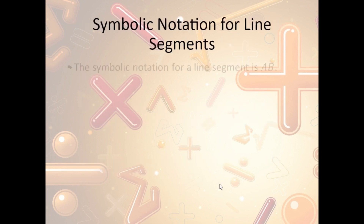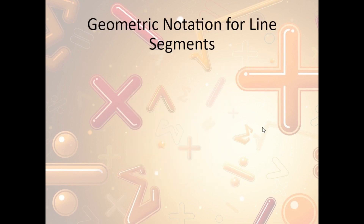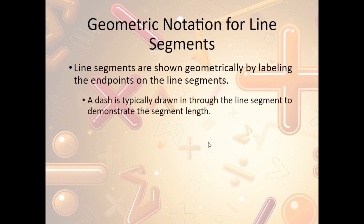Symbolic notation for line segments: when we talk about a line segment, we label it as AB — the two endpoints. So if this is A and this is B, we call it segment AB and write it just like that. Geometrically, line segments are shown by labeling the endpoints. A dash is typically drawn through the line segment to demonstrate the segment length.